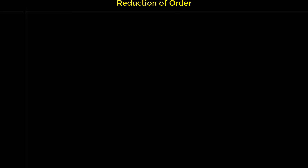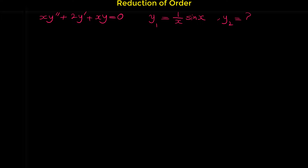In this video I'm going to show you how we can find the second solution of a second order differential equation if you have one solution. Consider this differential equation: x·y'' + 2y' + x·y = 0. This is a second order linear differential equation, and we know one of its solutions. Since a second order differential equation has two independent solutions, one solution is given as (1/x)·sin(x), and we are asked to find the other solution.